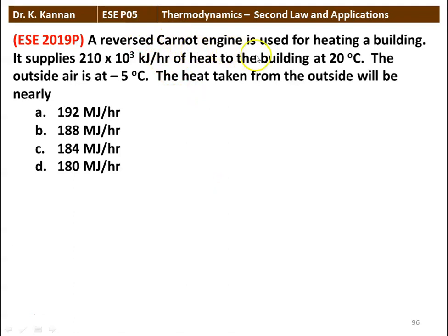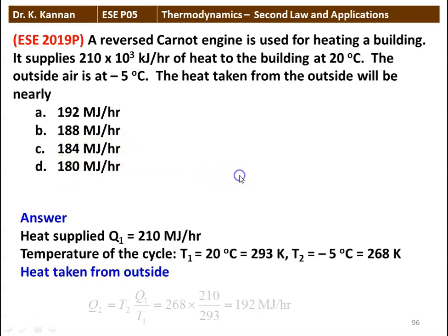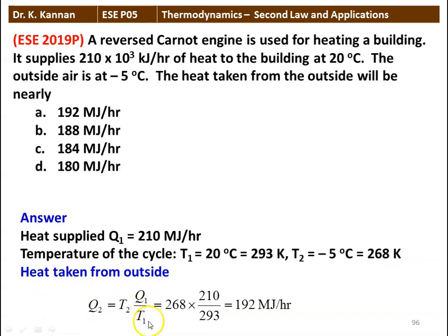First question: a reversed Carnot engine is used for heating a building. It supplies 210 × 10³ kJ per hour of heat to the building at 20°C. The outside air is at minus 5°C. The heat taken from the outside will be nearly 192, 188, 184, or 180 MJ per hour. Answer: heat supplied Q1 = 210 MJ/hr, T1 = 20°C = 293 K, T2 = −5°C = 268 K. Q2 = T2 × Q1 / T1 = 268 × 210 / 293 = 192 MJ per hour.